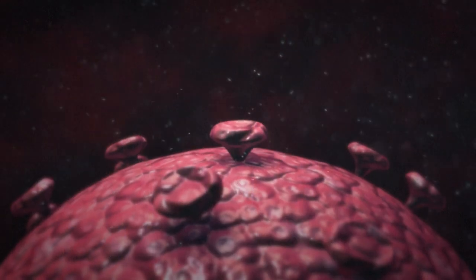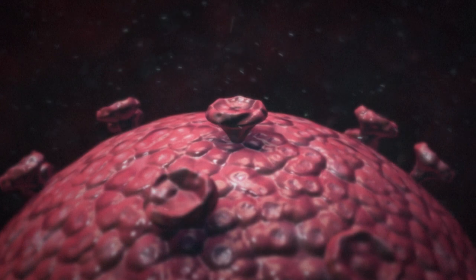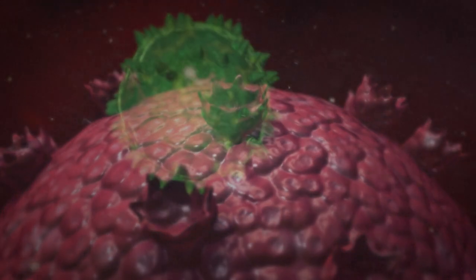For example, if the proteins on the surface of the virus mutate in such a way as to trick or counter the immune system in some way, a virus can become very dangerous.